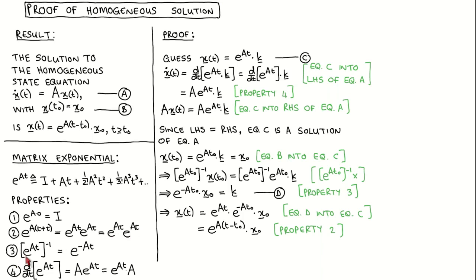The third property states that the inverse of the matrix exponential of At is the matrix exponential of minus At. The fourth property states that the derivative with respect to t of the matrix exponential of At is A times the matrix exponential of At, which is the same as the matrix exponential of At times A.